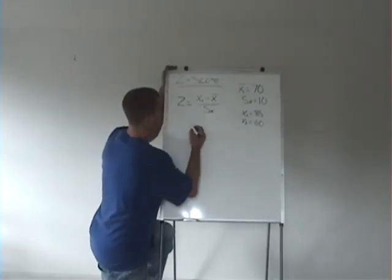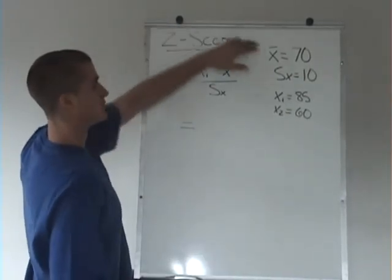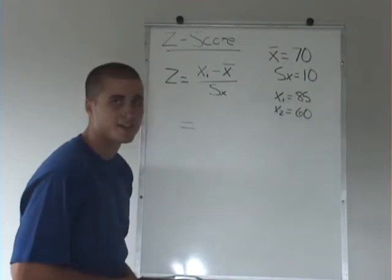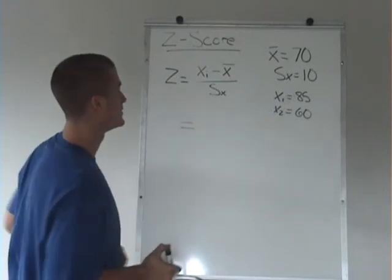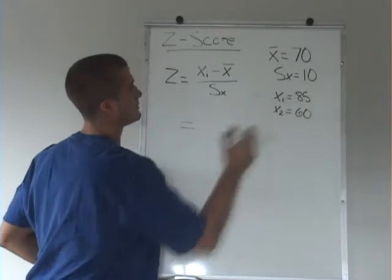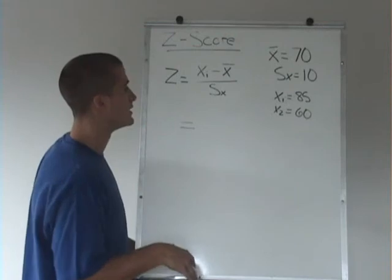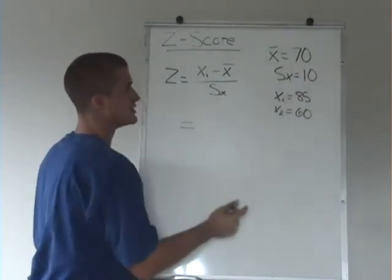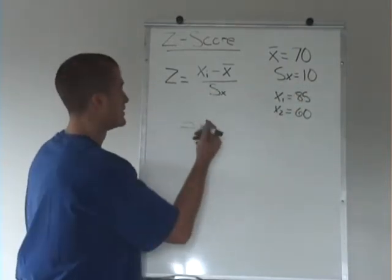So what we're going to do is say the average test score was 70%. And I know in Steve's class that might be a little bit high, but let's say the average test score is 70%, and we have a grade of 85 and a grade of 60. So we're going to find out what their respective z-scores are based on this average and this standard deviation. This is saying the average person deviates from that 70% by 10%.